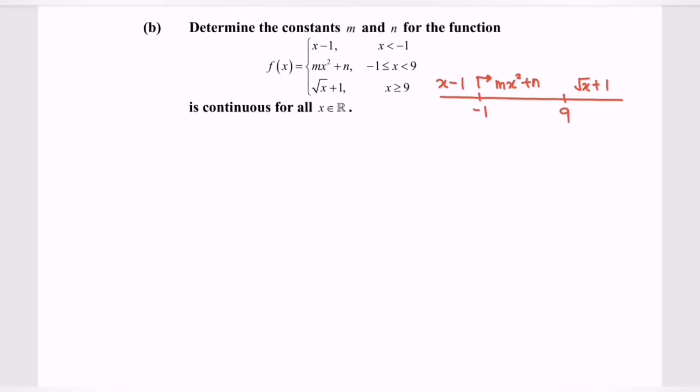The question asks us to find the value of m and n. By using the second condition, which is the limit when x approaching negative 1 for the function f(x) exists.